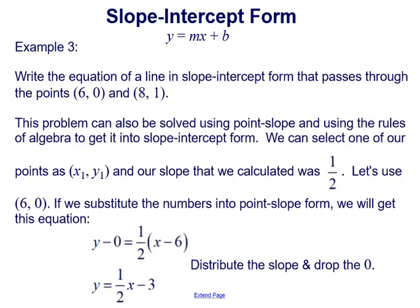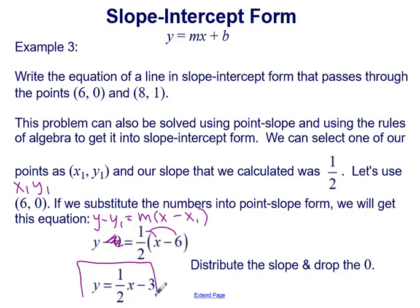This problem can also be solved using point-slope form. Using point (6, 0) as x1 and y1 and slope 1 half, we substitute into y minus y1 equals m times (x minus x1), getting y minus 0 equals 1 half times (x minus 6). Distributing the slope and dropping the 0 gives y equals 1 half x minus 3 — the same slope-intercept form equation, just using point-slope as a middle step.